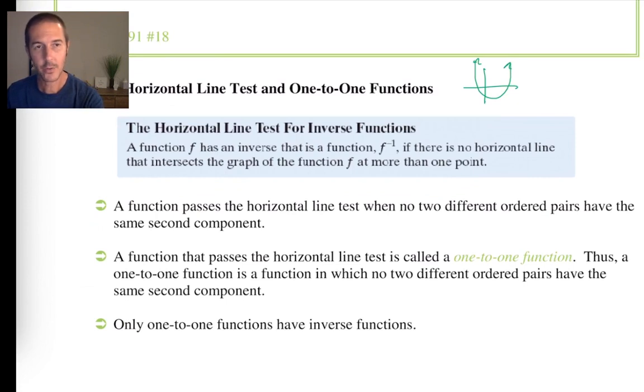If we encounter a graph that not only passes the vertical line test, but it also passes the horizontal line test, it has to pass both, then we say that that function is a one-to-one function. And it doesn't happen all that often. It's pretty unique.